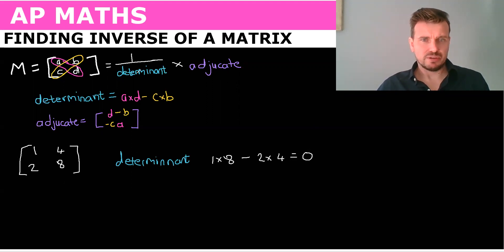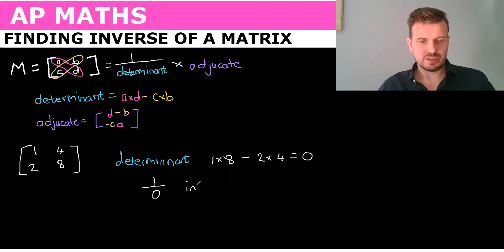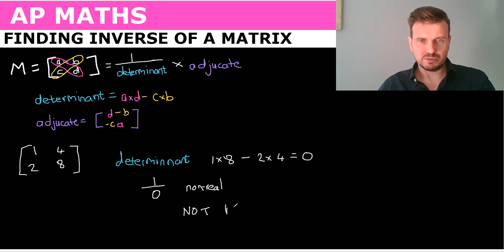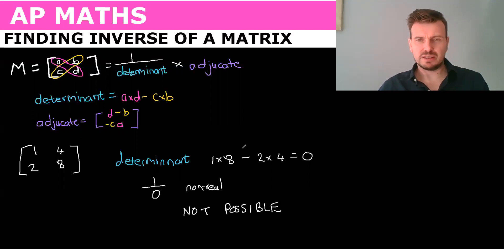So if we try to multiply one by the determinant, we get one over zero, which is impossible because this is non-real — so it's not possible. Where your determinant is equal to zero, you cannot find the inverse of the matrix.